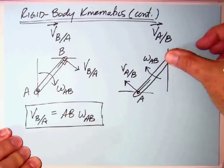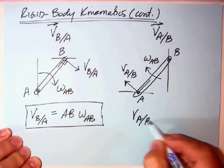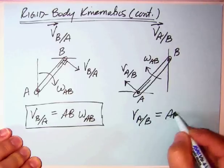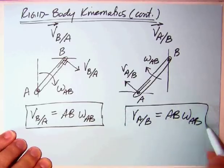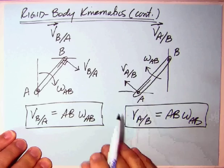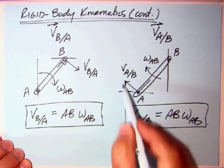Well, if I fix B, then A can only move in a circle. So for the velocity of A relative to B, you end up with, again, AB times omega AB, the same thing, except its direction in an XY coordinate system. This is right and down. This is going to be left and up.